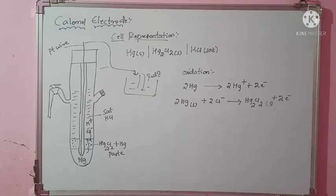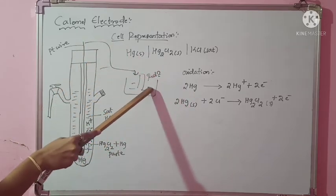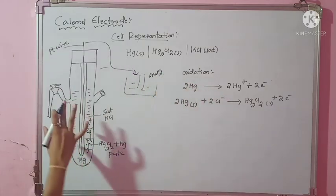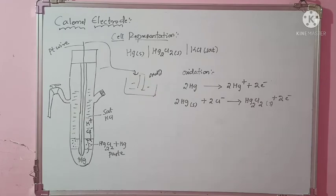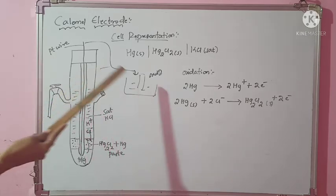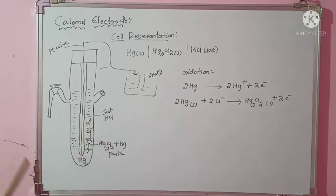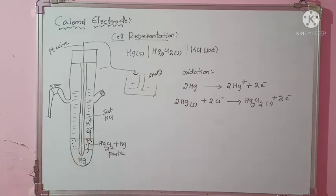Now, if the calomel electrode undergoes reduction: if the other cell you are connecting is undergoing oxidation, then definitely this calomel electrode will undergo reduction. That means it should gain electrons. Out of the species K+, Cl−, and Hg — K+ and Cl− will never accept electrons. The only species deficient in electrons is Hg2+, so that is the one that will undergo reduction.